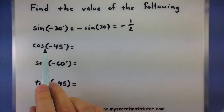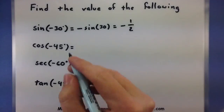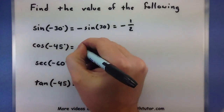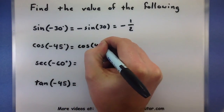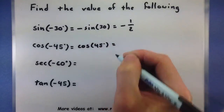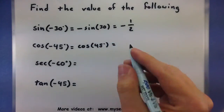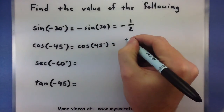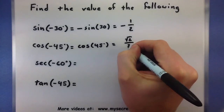Next, cosine of negative 45 degrees. These are really nice because now I don't have to worry about that negative sign whatsoever — it's gone. I can just look at the cosine of 45 degrees, which is the square root of 2 over 2.